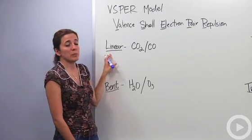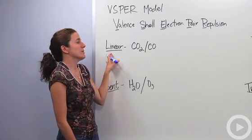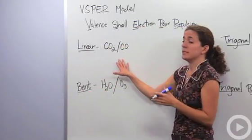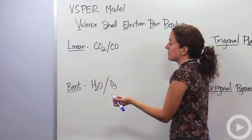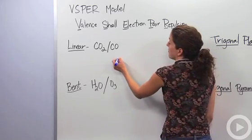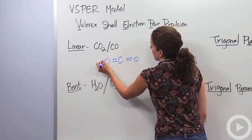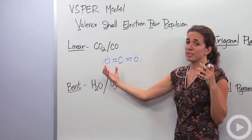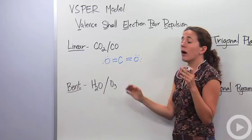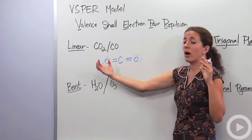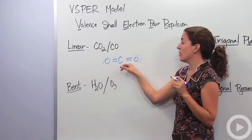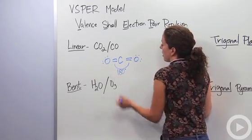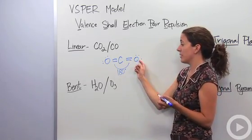One of the first shapes we want to talk about is a linear shape. Something that's linear is carbon dioxide and carbon monoxide. Carbon dioxide looks like this. We want these oxygens to be as far apart as possible. These electrons are repulsed by each other, meaning they're going to be as far apart as they can. They're actually going to create a linear form. This angle is going to be 180 degrees, as far apart as they possibly can get, which makes our linear shape.